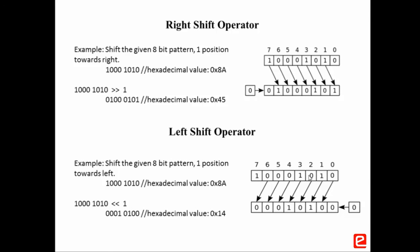Left shift operator: this operator is used to shift the bits towards the left by a specified position. Consider an example: to shift the 8-bit pattern 10001010, whose hexadecimal value is 0x8A, one position towards the left. It will become 00010100, whose hexadecimal value is 0x14. Thank you for watching this video tutorial.